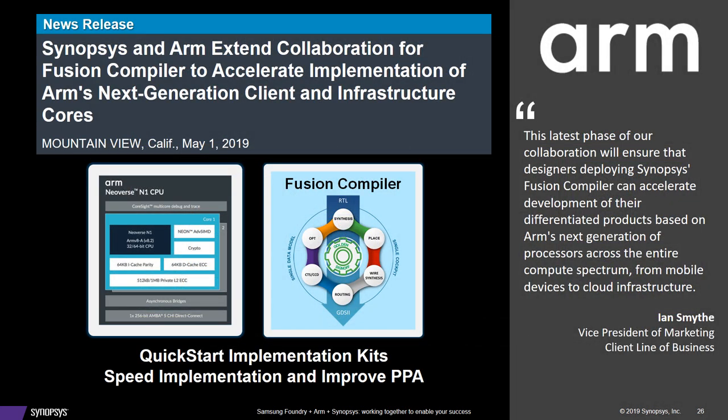Just talking about Fusion Compiler — this is a recent press release for the Neoverse N1, showing some of the recent work that we've done with ARM. The real benefit for me running Hercules is that I leverage the learnings from Neoverse, because there are a lot of similarities between cores. The techniques that work on one core often work on the next, so we definitely leverage the QUIC from Neoverse N1 into Hercules.